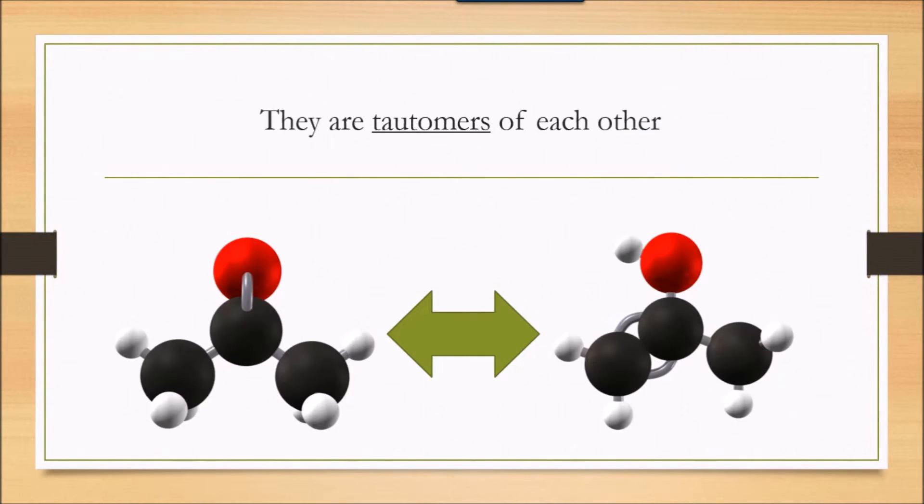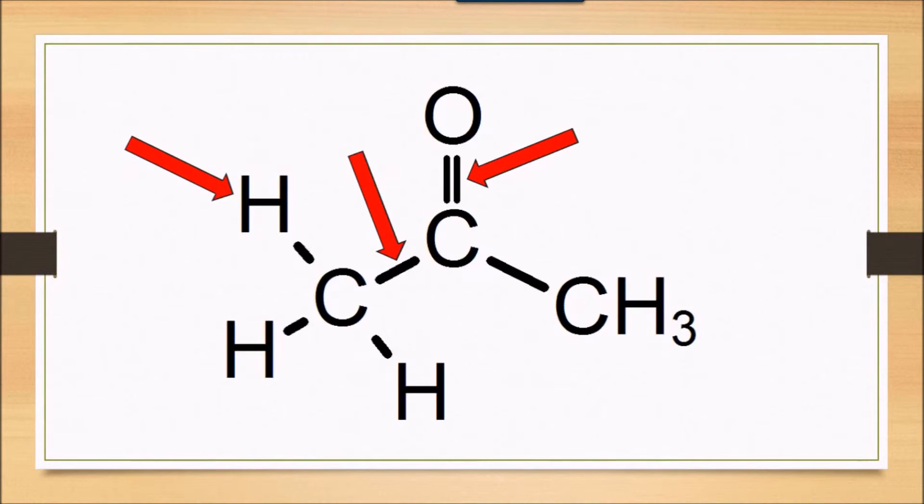These molecules are tautomers of each other, which means that in solution, they can transform into each other. How does that work? Let's take propanone as the starting point. We are interested in three things: the carbon-oxygen double bond, its carbon-carbon single bond, and this hydrogen atom, all labeled here.